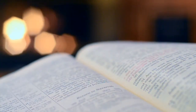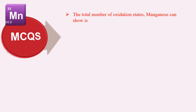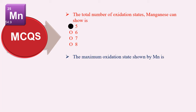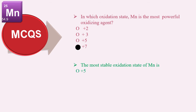MCQ practice: The total number of oxidation states manganese can show is 5, 6, 7, or 8. The maximum oxidation state shown by manganese is +5, +6, +7, or +8 — correct answer: +7. In which oxidation state does manganese act as the most powerful oxidizing agent: +2, +3, +5, or +7? Correct answer: +7. The most stable oxidation state of manganese is +5, +6, +7, or +2 — correct answer: +2.